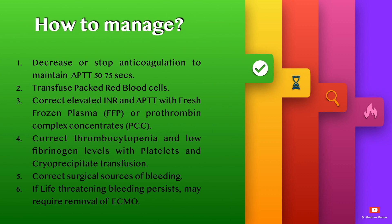How to manage this bleeding on ECMO? Decrease or stop the anticoagulation to maintain the APTT in the range of 50 to 75 seconds. Transfuse PRBCs to maintain adequate hemoglobin.